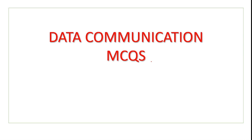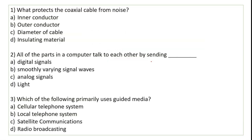Hello everyone, in this video we will do multiple choice questions of data communication. First question: what protects the coaxial cable from noise? The outer covering of the coaxial cable helps protect it from noise. So the answer is outer conductor.